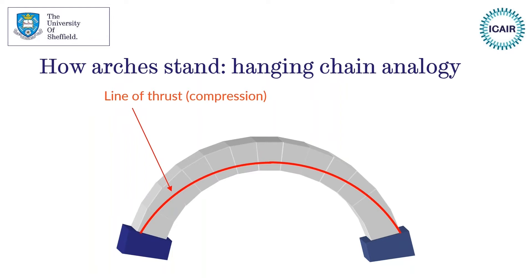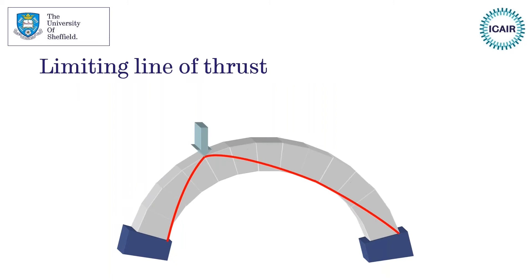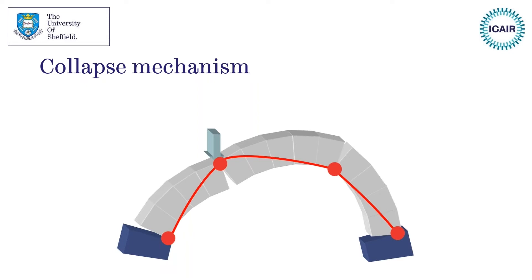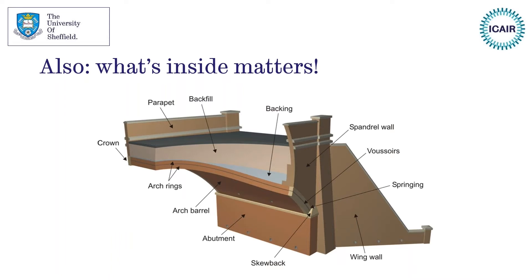There are lots of possible lines of thrust. However, if the abutments move slightly inwards or outwards, you'll get a different line of thrust. There is a limiting line of thrust. In a single span bridge, if you apply an eccentric load around the quarter-span point and keep increasing that load, you get to a point where you can only just fit that thrust line within the thickness of the masonry. If you apply any more load, you get hinges forming and then collapse. You can see here we've got a four-hinge collapse mechanism, and clearly the structure is unstable and cannot take any more load.